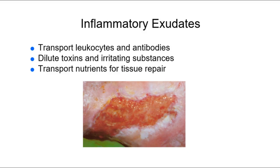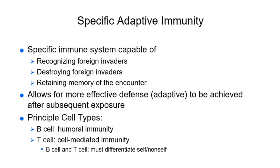Now that we've talked about the basics of how inflammation works, we're going to talk about specific adaptive immunity versus innate immunity. Your specific immune system is capable of recognizing specific invaders, destroying foreign invaders, and retaining memory of the encounter. The next time you're exposed to a specific pathogen, you're going to have an extraordinary response and be able to cut it off before it can really injure you.